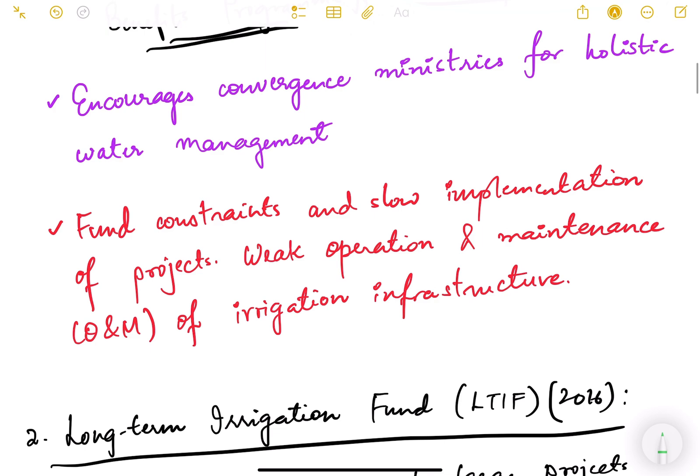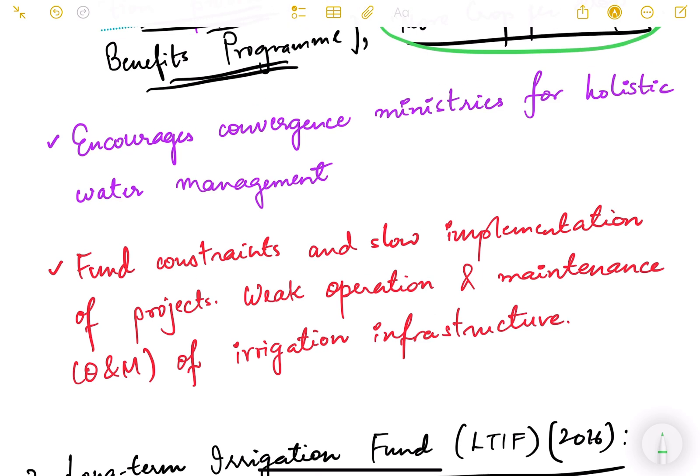Now what are the benefits of this scheme? It encourages convergence among ministries for holistic water management. So various ministries and departments of the government like Irrigation Department, Agriculture Department, Panchayati Raj, Rural Development, they converge together and work together for holistic development of water management. This is a very important point.